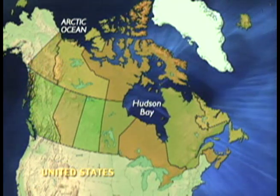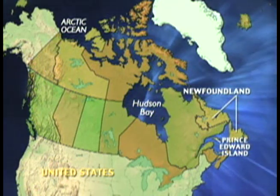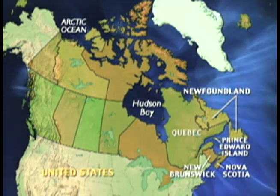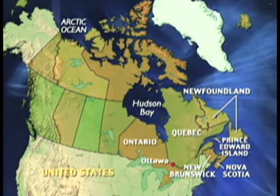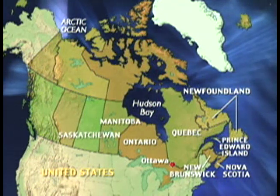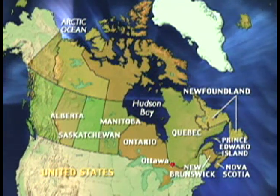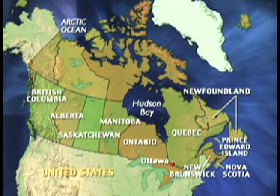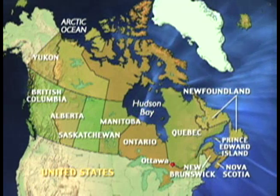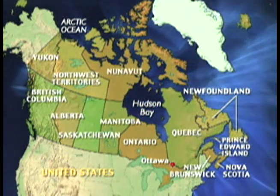From east to west, the provinces are Newfoundland, Prince Edward Island, Nova Scotia, New Brunswick, Quebec, Ontario — with Ottawa, Canada's capital — Manitoba, Saskatchewan, Alberta, and British Columbia. The three territories in northern Canada are the Yukon Territory, the Northwest Territories, and Nunavut.